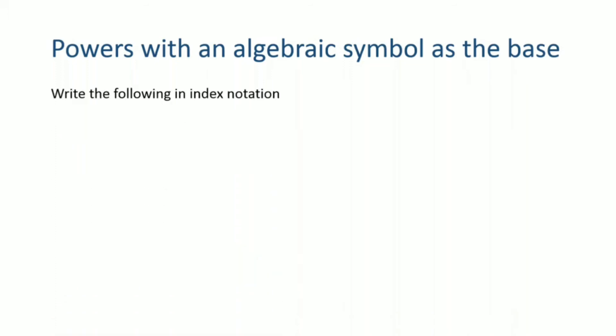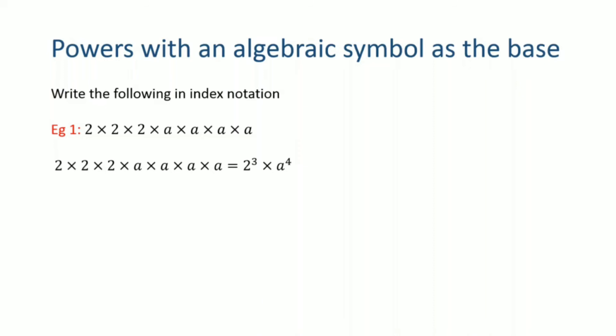Write the following in index notation: 2 into 2 into 2 into a into a into a into a. Here 2 is written 3 times, so that part in index notation gives you 2 to the power 3. A is written 4 times, so that part gives you a to the power 4. Remember when there is an algebraic symbol, the numerical part must come first and then the algebraic notation. Also, the multiplication sign between the number and the algebraic symbol can be omitted.